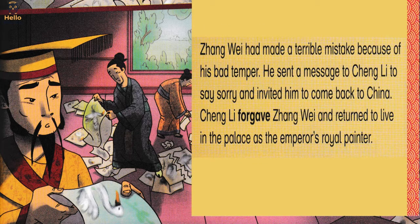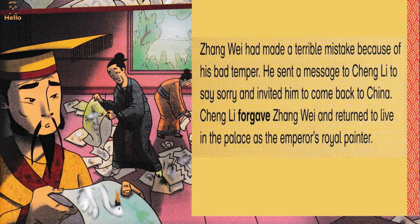Zhang Wei had made a terrible mistake because of his bad temper. He sent a message to Cheng Li to say sorry and invited him to come back to China. Cheng Li forgave Zhang Wei and returned to live in the palace as the emperor's royal painter.